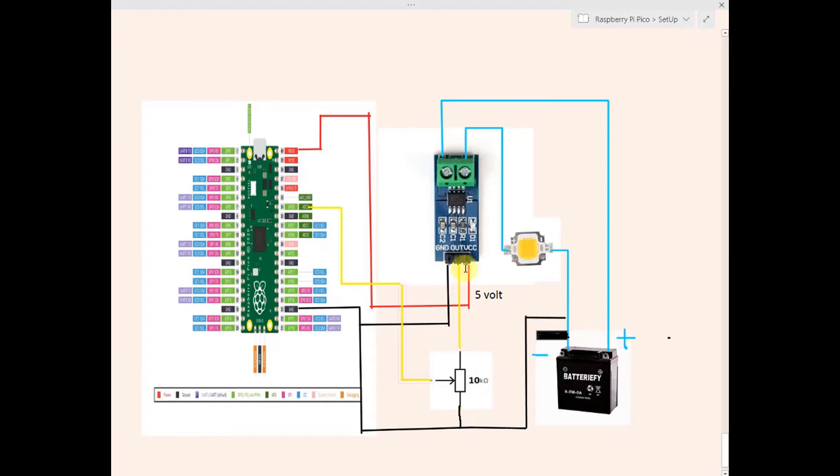So we have taken the output of the sensor and given it to a 10 kilo ohm potentiometer and the output of the potentiometer is given to GPIO number 28 which is an analog input. So why have we used this potentiometer? It is because the sensor will output voltage from 0 to 5V and this Raspberry Pi Pico is a 3.3V system